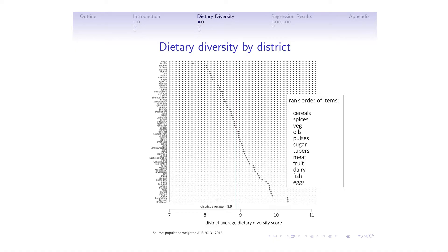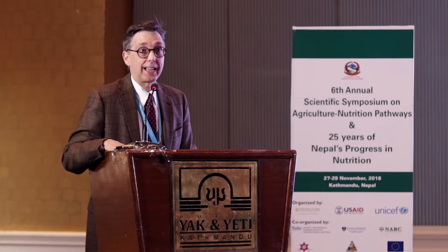I've also put on the graph the rank order of items that make up the dietary diversity score — the most popular food groups from top to bottom. Nearly every household in Nepal consumes from the cereal, spices, vegetable, and oil categories, but relatively few households consume from dairy, fish, and eggs at the bottom of the list. That point has been made repeatedly. In the last seven days I haven't eaten any fish, so I would have a score of 11.